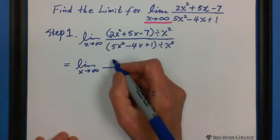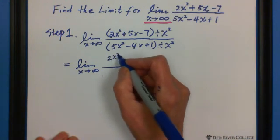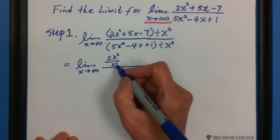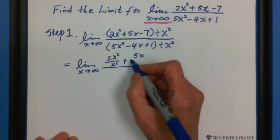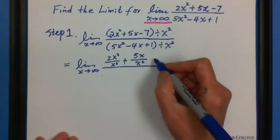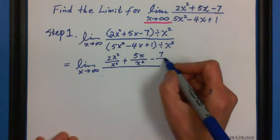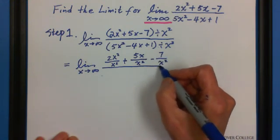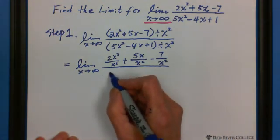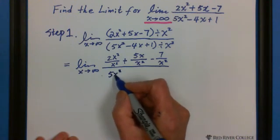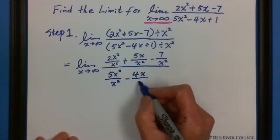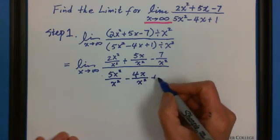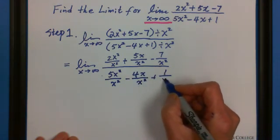We can write down each term divided by x squared because this is bracket distribution. The 2x squared divided by x squared, plus 5x divided by x squared, minus 7 divided by x squared. The bottom same: 5x squared divided by x squared, minus 4x divided by x squared, plus 1 divided by x squared.